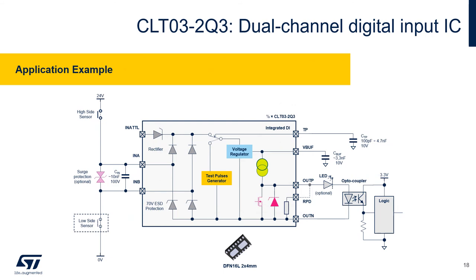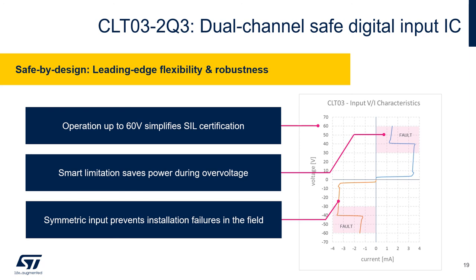This is the typical application diagram showing connection of high side or low side sensors. There is also an optional transload diode for surge protection if it is required, and a very few external capacitors. The output drives an optocoupler in this case, but it also enables multiplying the amount of optocouplers or even making a combination with a status LED. The 60 volt tolerance improves reliability and simplifies achieving safety integrity level certification. When the voltage at the input exceeds operating conditions above approximately 30 volt, the input current is limited to even much smaller values — a smart way for further reduction of power dissipation at overvoltage conditions.